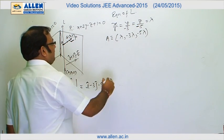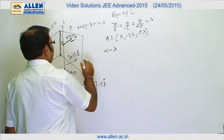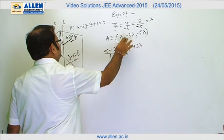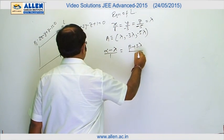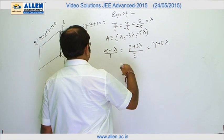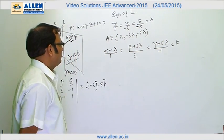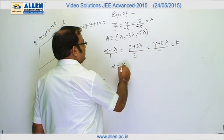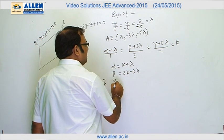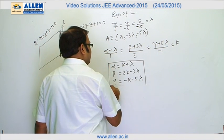The normal vector of plane P1 is i + 2j − k. So we get: (α − λ)/1 = (β + 3λ)/2 = (γ + 5λ)/(−1) = k. This gives us: α = k + λ, β = 2k − 3λ, and γ = −k − 5λ. Call these equation 1.